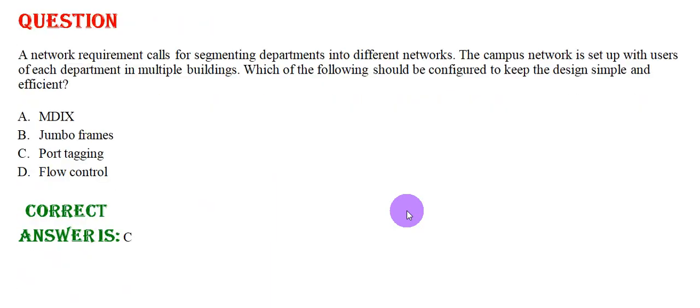A network requirement calls for segmenting departments into different networks. The campus network is set up with users for each department in multiple buildings. Which of the following should be configured to keep the design simple and efficient? Option A: MDIX. Option B: Jumbo frames. Option C: Port tagging. Option D: Flow control. The correct answer is Option C.